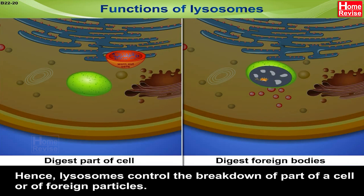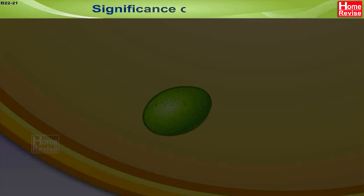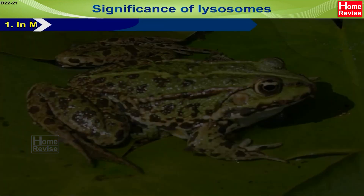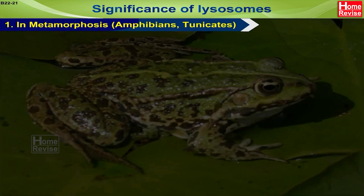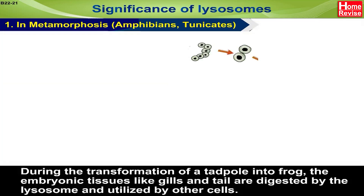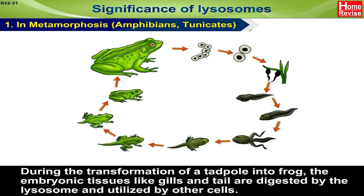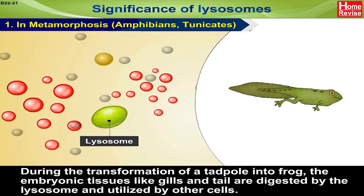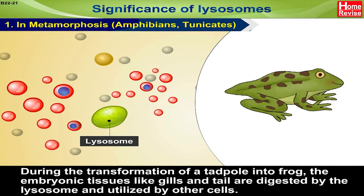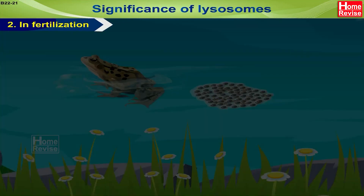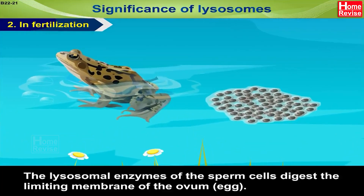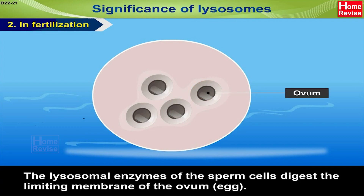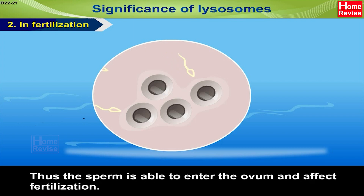Lysosomes control the breakdown of part of a cell or of foreign particles. Significance of Lysosomes: 1. In metamorphosis of amphibians and tunicates — during the transformation of a tadpole into a frog, the embryonic tissues like gills and tail are digested by the lysosomes and utilized by other cells. 2. In fertilization, the lysosomal enzymes of the sperm cells digest the limiting membrane of the ovum, thus the sperm is able to enter the ovum and affect fertilization.